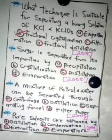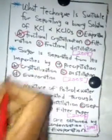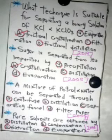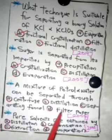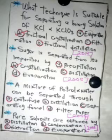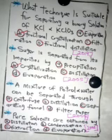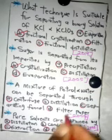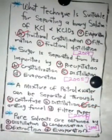The next question: a mixture of petrol and water can be separated through — the answer is a separating funnel. A separating funnel is used for separating liquids that do not mix, such as petrol and water, also due to the fact that they have different densities.